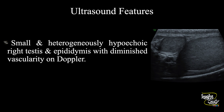So in summary, a small and heterogeneously hypoechoic right testis and epididymis are seen with diminished vascularity on Doppler, suggesting this to be a case of chronic epididymoorchitis.